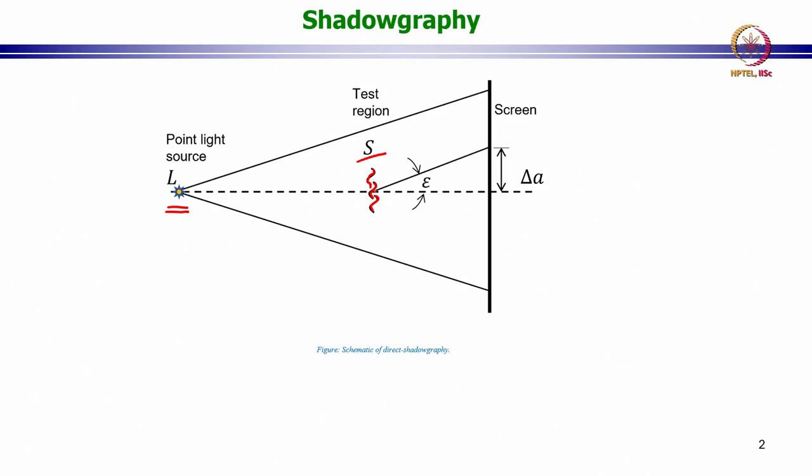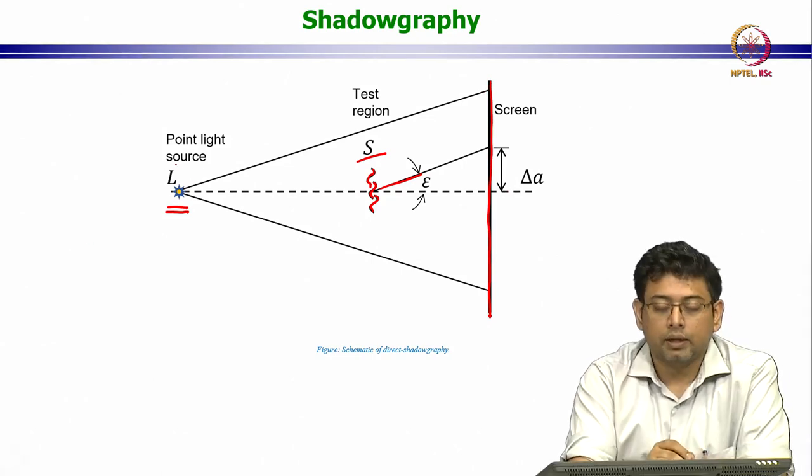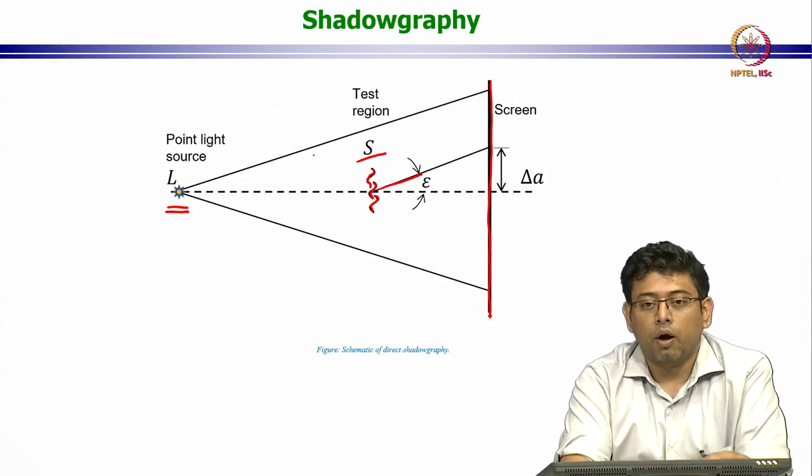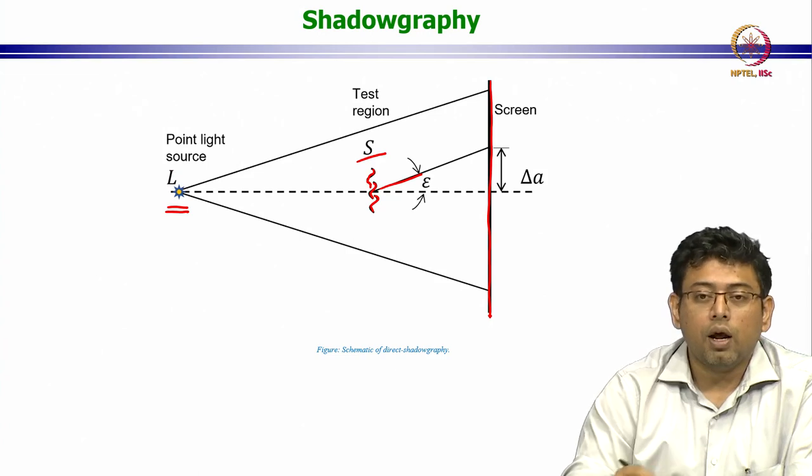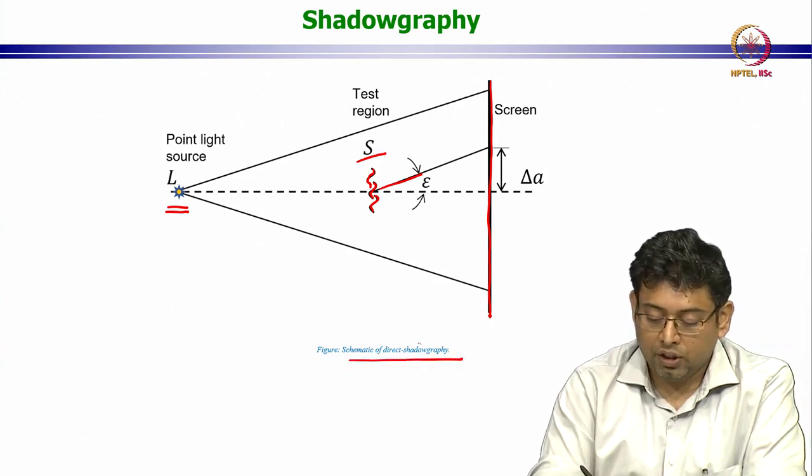Yet the differences, even despite the fact they are small, they do affect the passage of light through this. This ray, for example, shows you a small amount of refraction - maybe this is a heated layer of gas that is rising above a slightly colder ambient gas, and this refracts the light and changes its direction. This is obviously a much exaggerated image, but once it changes the image, you have a screen at the end where the image data can be taken.